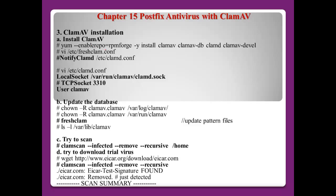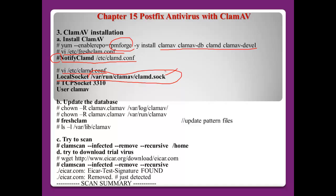You also need to install RPM Forge first. Then open /etc/freshclam.conf and comment out the 'NotifyClamd' line. Next, open /etc/clamd.conf and uncomment the 'LocalSocket' line — this is the name of the ClamAV socket, used to communicate with other programs like Amavis. Comment out the TCPSocket line as it will not be used. The socket path will be the clamd socket name.